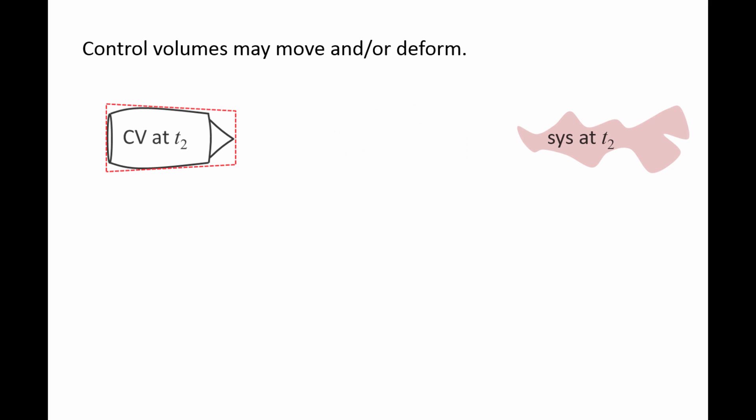At a later time t2, the control volume has traveled to the left, while the system has been expelled to the right. In this case, the control volume has moved, but not deformed.